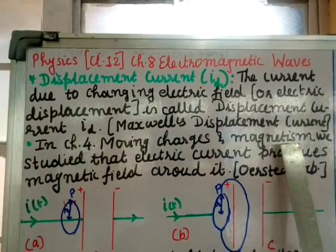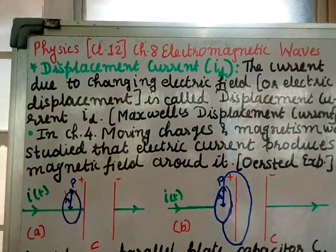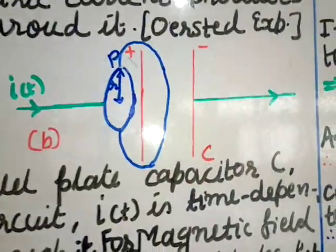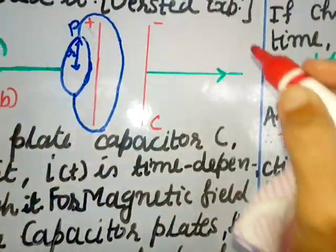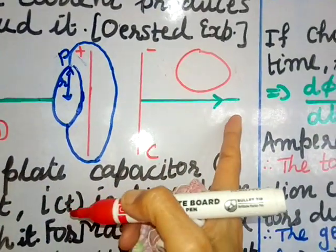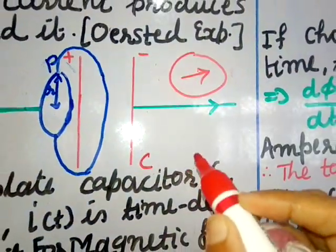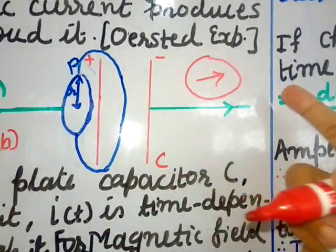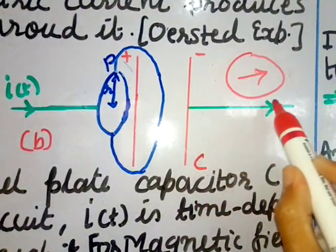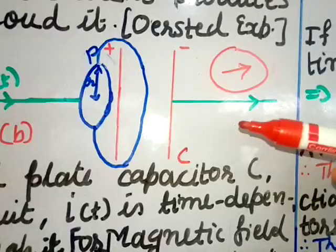In chapter 4, moving charges and magnetism, we studied that electric current produces a magnetic field around it — Oersted's experiment. When Oersted performed the experiment, he found that a magnetic needle placed near a current-carrying wire was deflected. When the direction of current was changed, the deflection also changed. He concluded that the current flowing in the wire is producing the magnetic field around it.